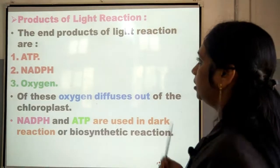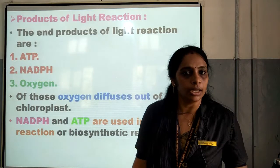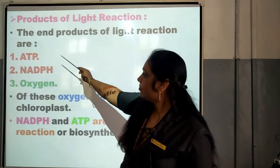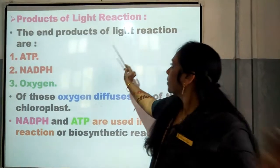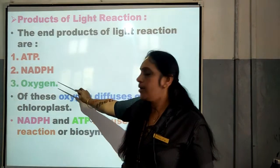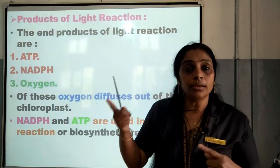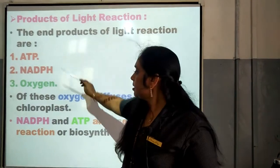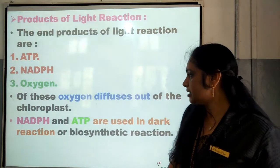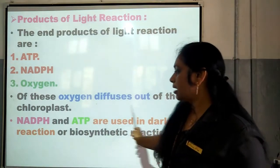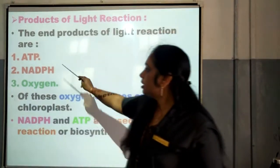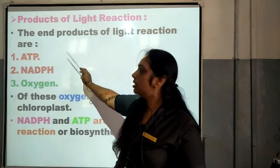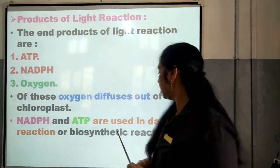This is very, very important for the children; you have to study it for the exam. Now, next: products of light reaction. The end products of light reaction are ATP, NADPH, and oxygen. During the light reaction, the end products produced are ATP, NADPH, and oxygen. These three are produced during non-cyclic photophosphorylation. Of these, oxygen diffuses out of the chloroplast. NADPH as well as ATP are used in the dark reaction or biosynthetic reaction. These are the two energy-rich compounds which are utilized in the biosynthetic reaction.